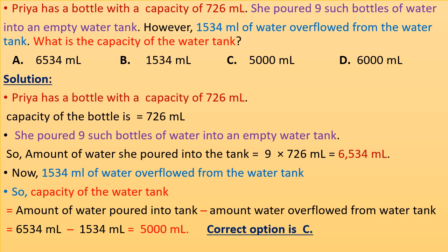Priya has a bottle with a capacity of 726 milliliters. She poured 9 such bottles of water into an empty water tank. However, 1534 milliliters of water overflowed from the water tank. What is the capacity of the water tank? Now, we have highlighted all the information that is given to us, and step by step we will solve the problem.